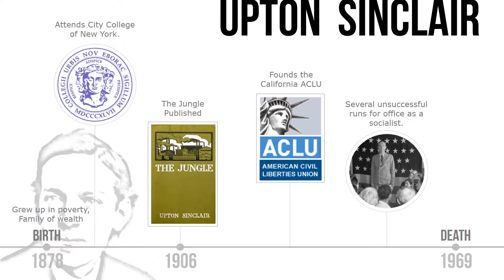In 1892, Sinclair enrolled at City College in New York at the age of 14. He supported himself through college by writing boys' adventure stories and jokes, and also sold ideas to cartoonists. In college, Sinclair became a member of the Socialist Party. At age 16, Sinclair decided not to have anything to do with his mother, staying away from her for over 35 years. In 1897, Sinclair studied law briefly at Columbia University.